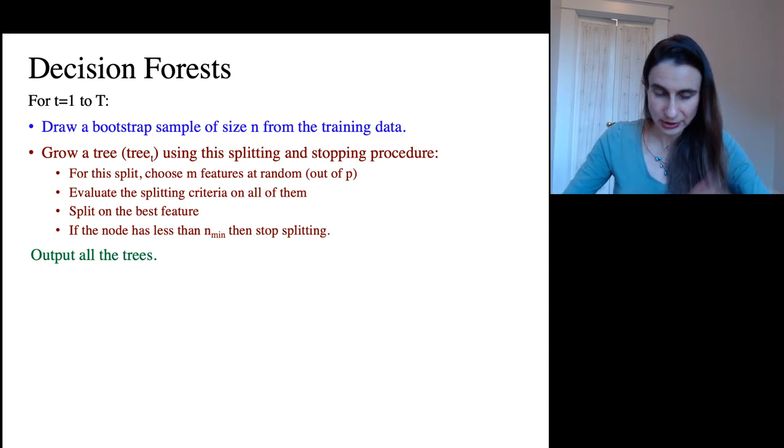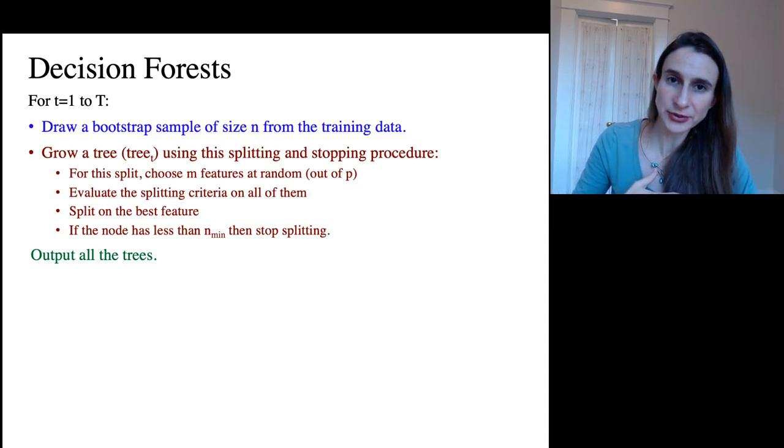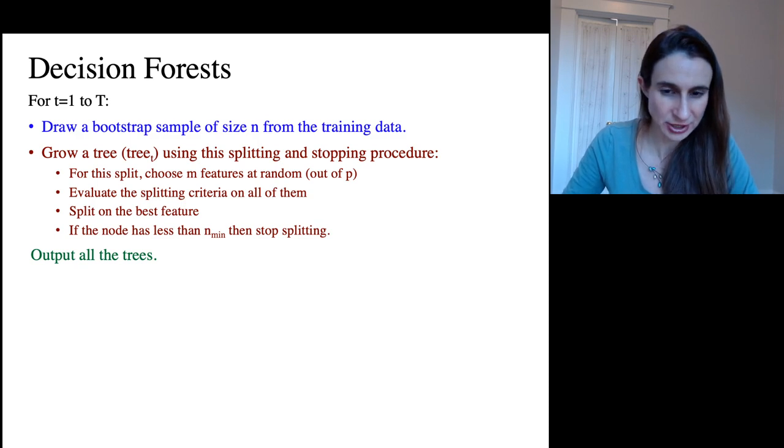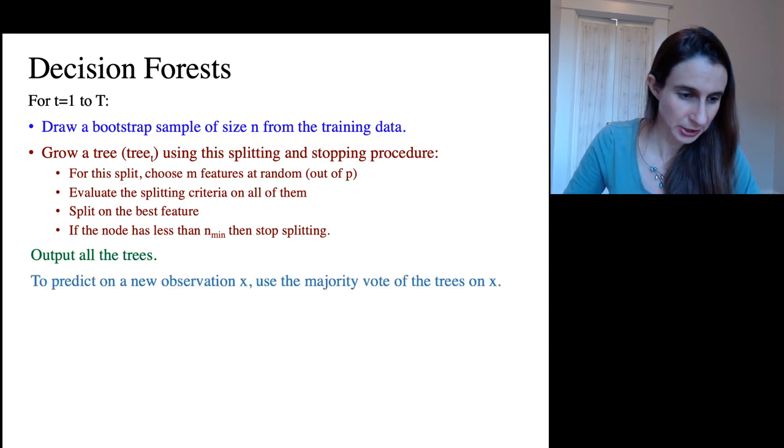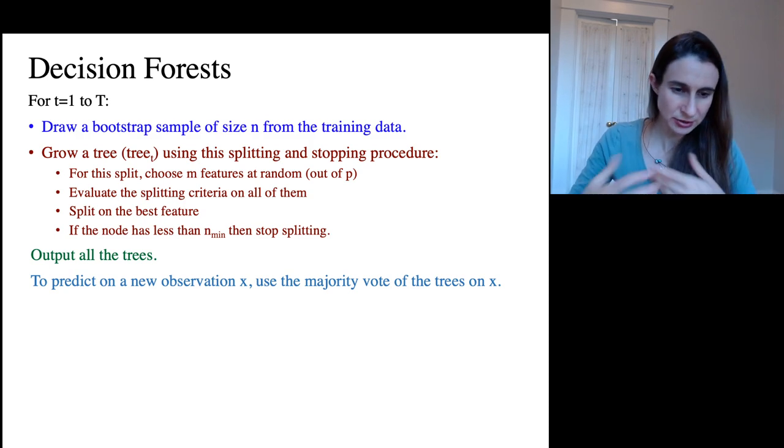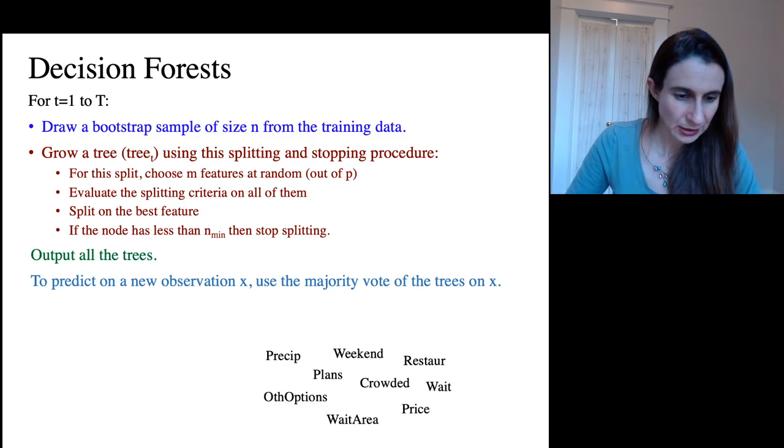So at the end you output all the trees and you use either the majority vote for classification or the average for regression as your final predictive model. To predict on a new observation, use the majority vote.